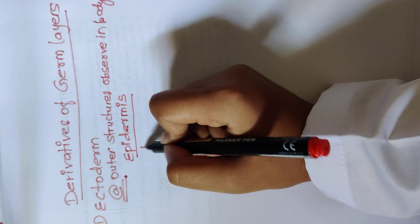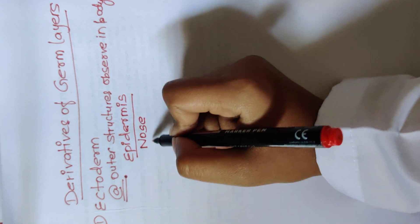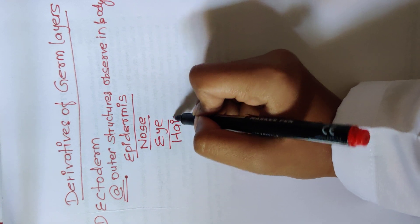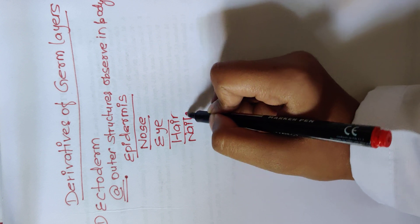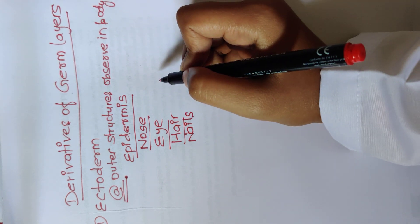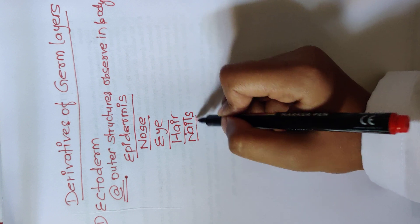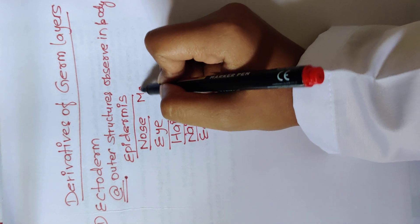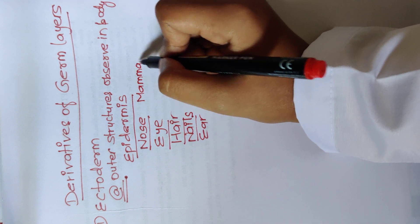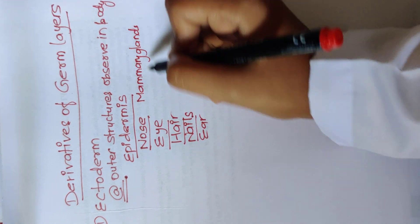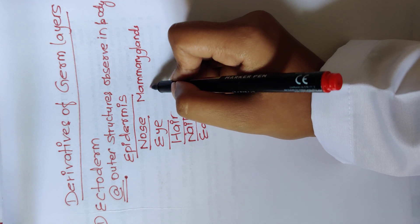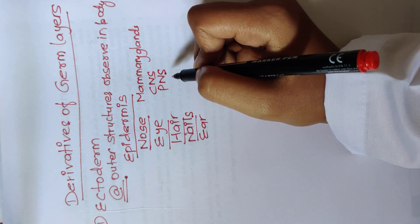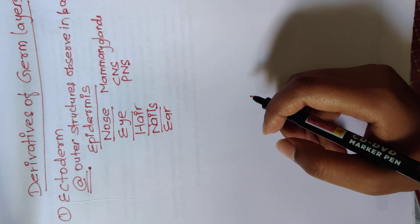Next, you can see nose, eyes, hairs, and nails. In the internal structures, ears are also included. It also includes mammary glands and brain. For brain, you can write CNS, which also includes PNS. This is what you can write for the derivatives of ectoderm.